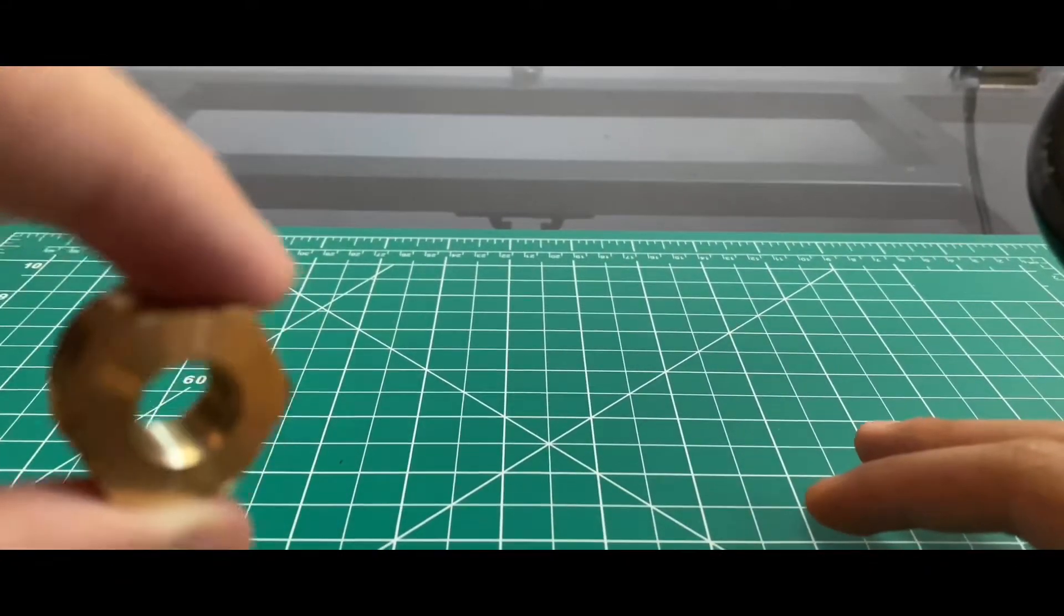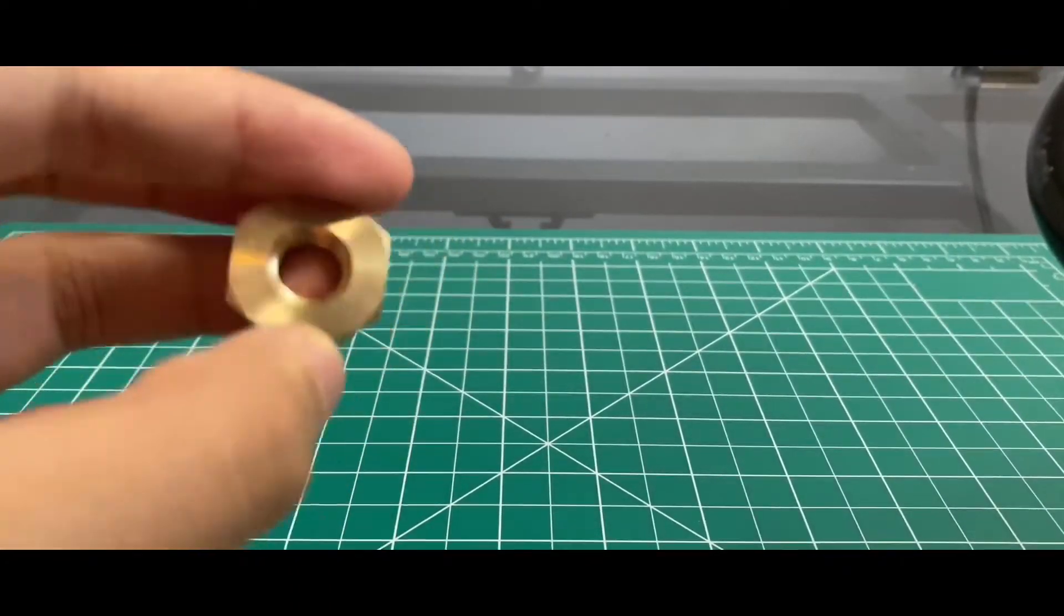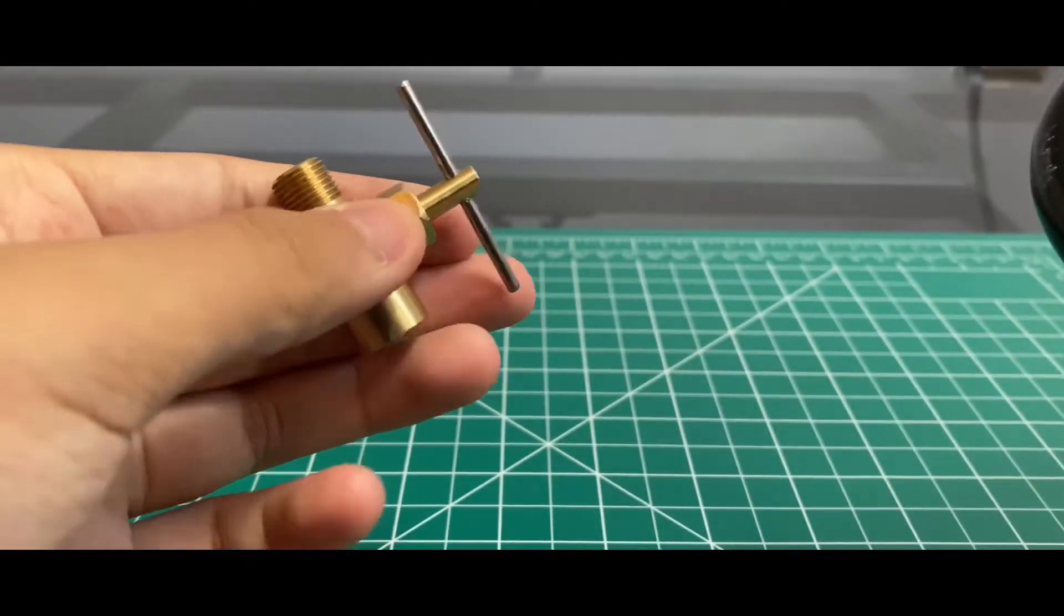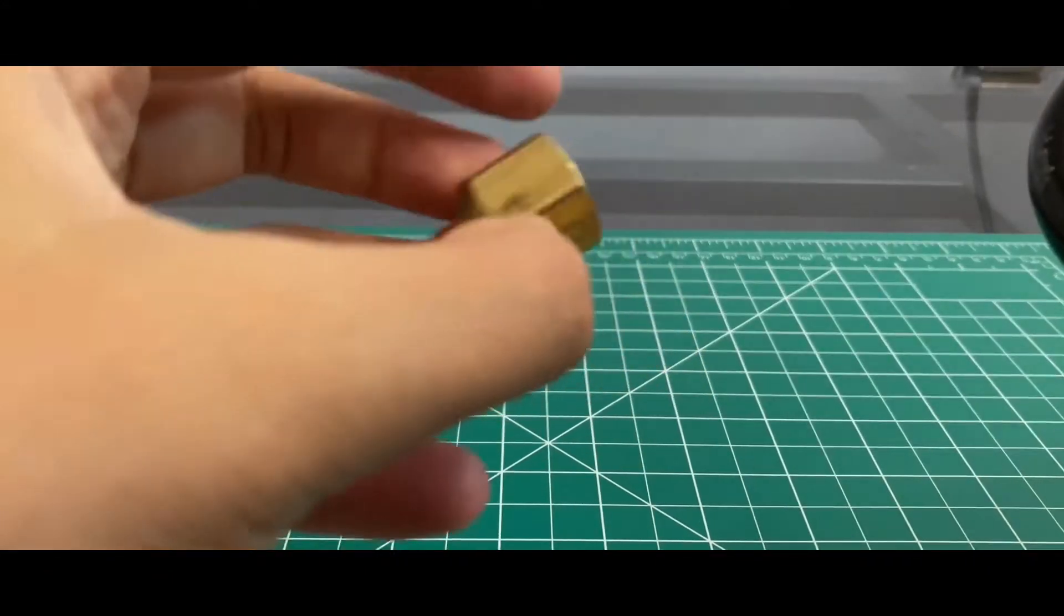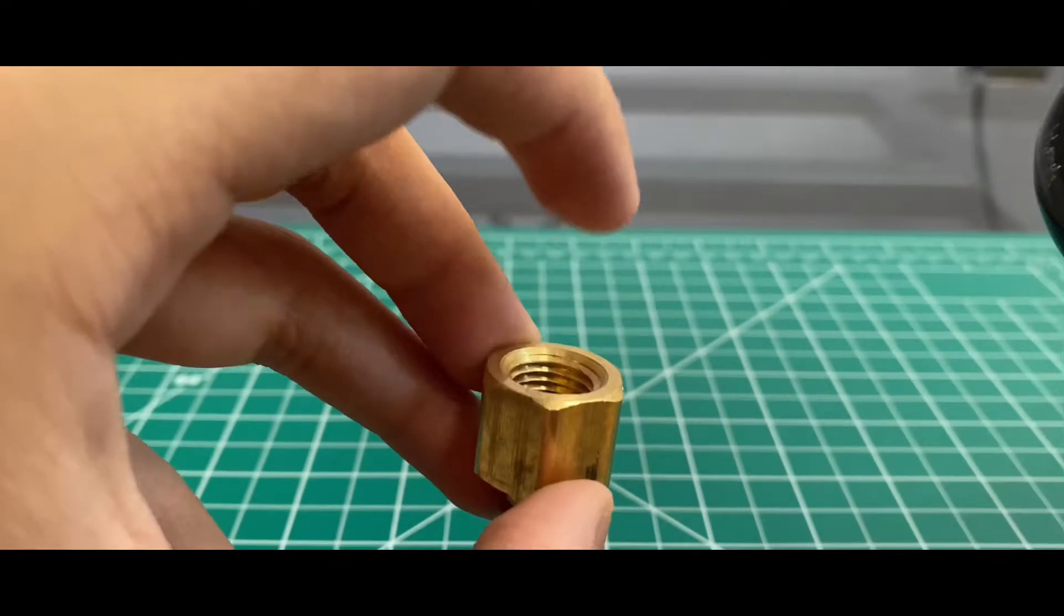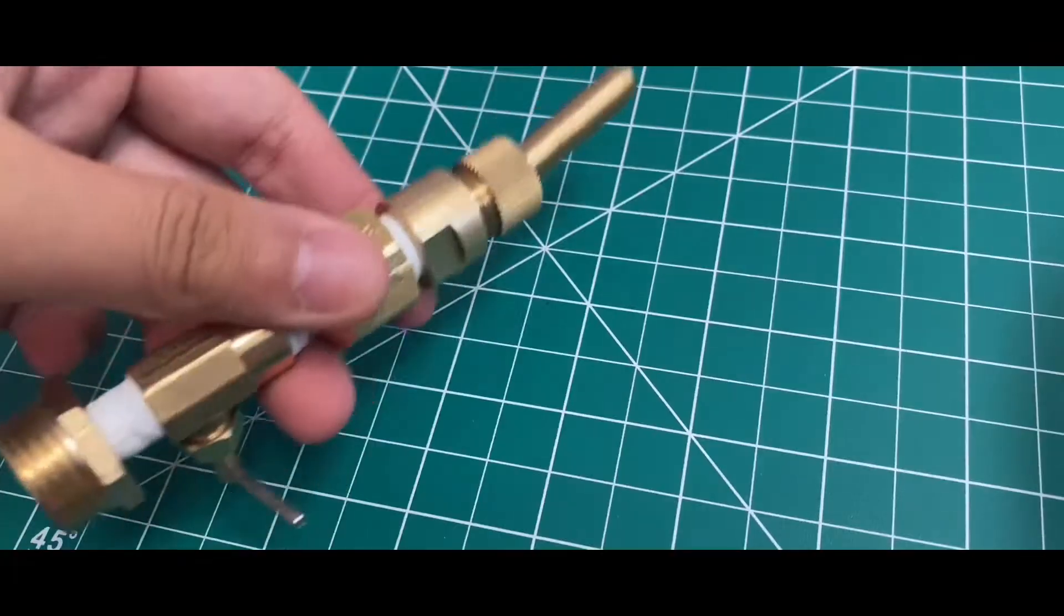To start off the build you need a 1/8 to 1/2 inch, two of them, reducers female to male. You're also going to need 1 1/8 needle valve male to female, a 1 1/8 male to 1 1/4 female adapter which is meant to hold a 1/4 inch sprinkler hose.